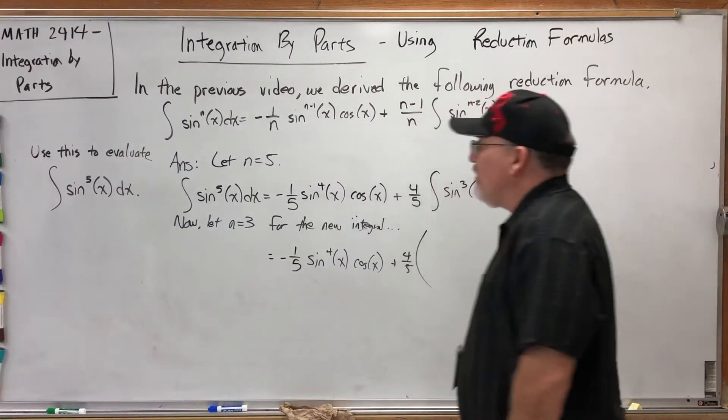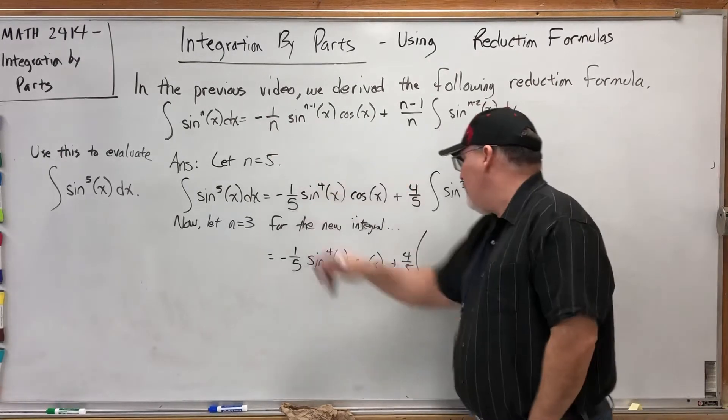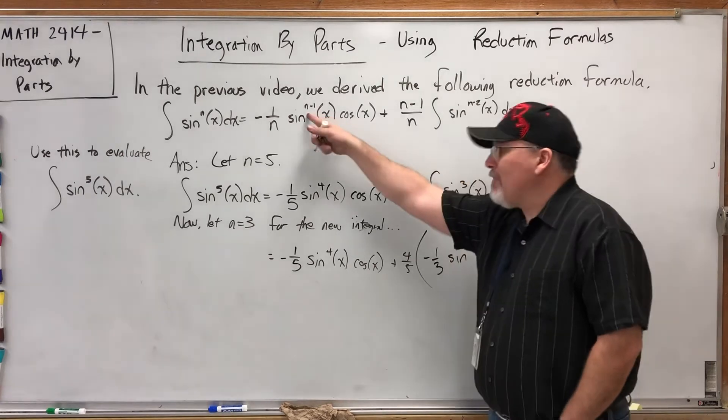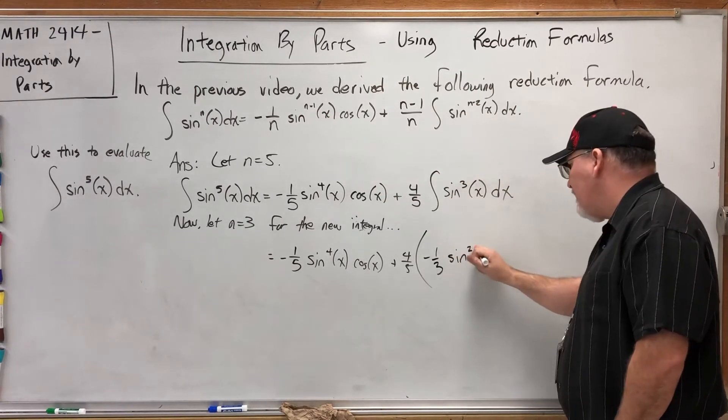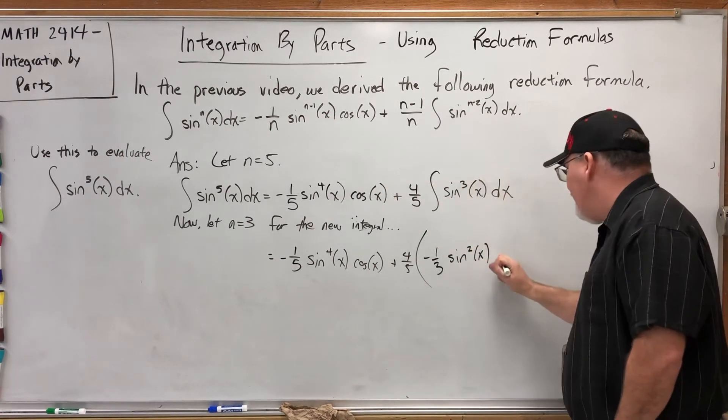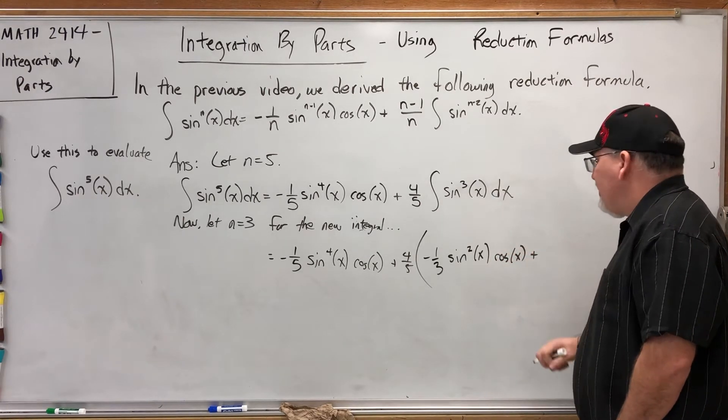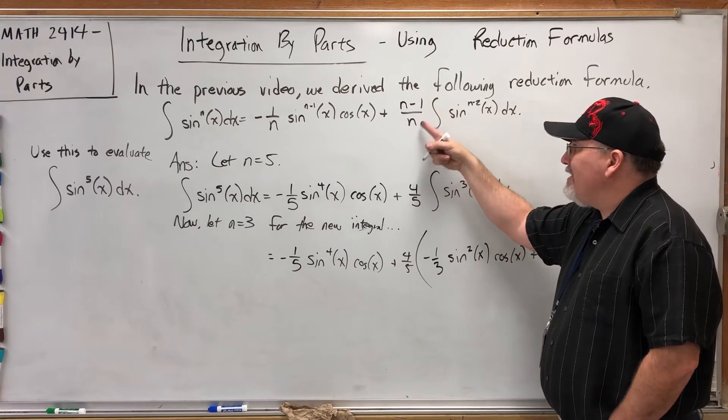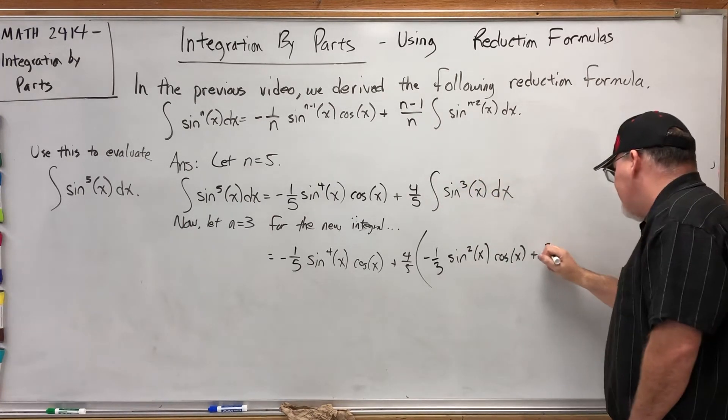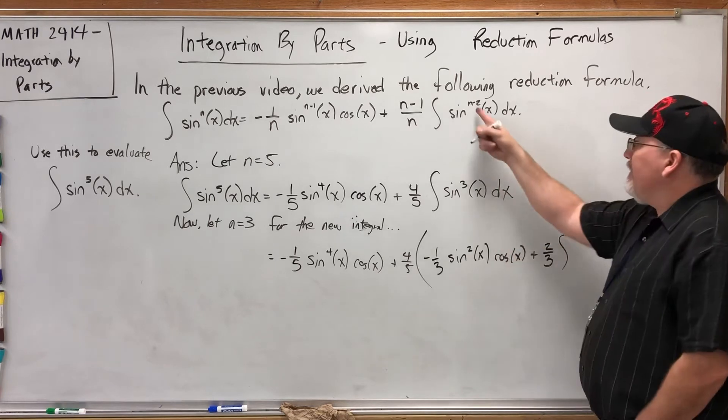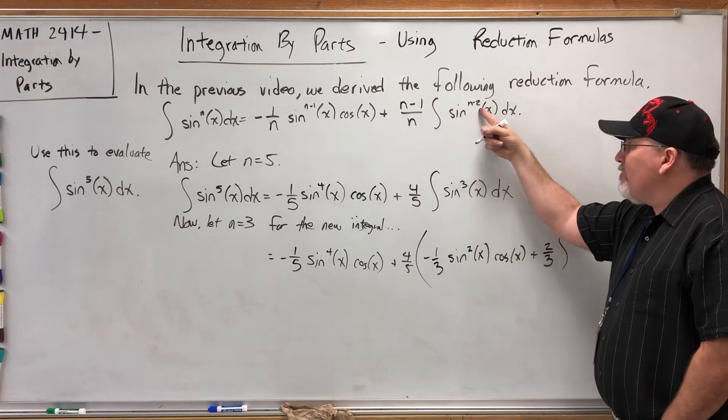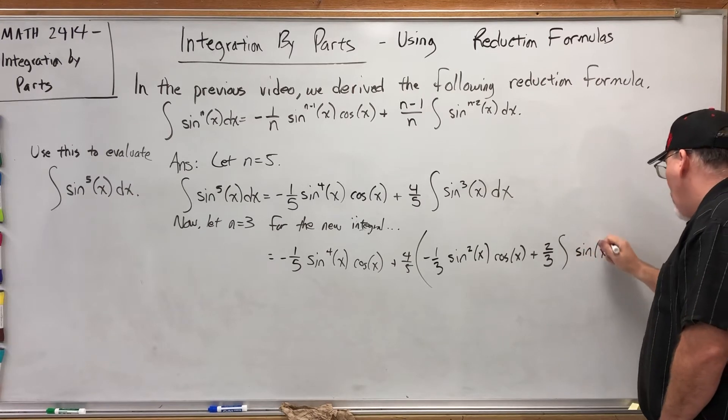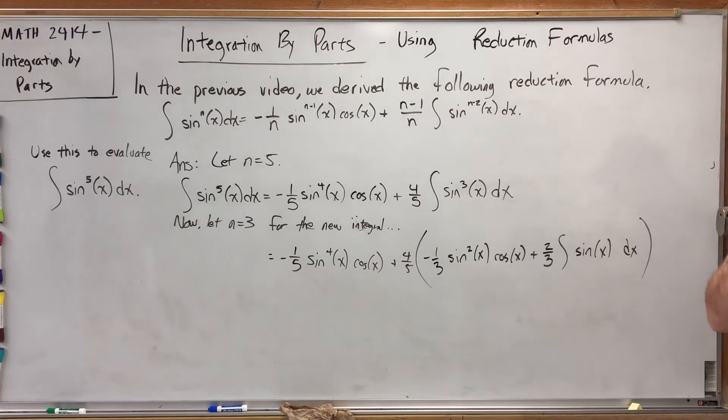Again we're using this formula but this time n is equal to three. So putting n equal to three into the reduction formula, we get negative one-third sine to the 3 minus 1 power, so sine squared of x cosine of x, plus n minus 1 over n is 2 over 3, so plus two-thirds integral of sine to the first power of x, or just sine of x, and then close off the tall parentheses.